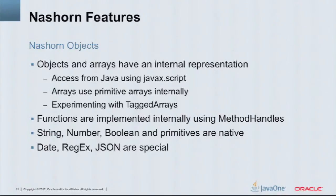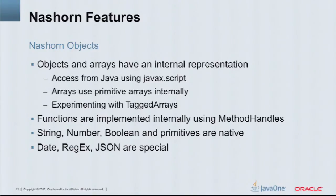Internally, arrays use primitive arrays, so you should expect good performance — similar to what you would get from Java. We're experimenting with tagged arrays: since JavaScript is an untyped language, a variable can have either an object reference or a primitive value assigned to it. A tagged array is a way of implementing a structure where we can mix pointers and numeric values together. Functions are implemented internally using method handles, so we're taking full advantage of JSR 292 — when you call a JavaScript method, it uses invokedynamic to get at the code for that method.